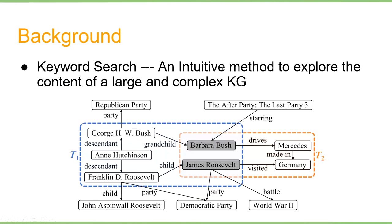When it comes to keyword search, we know it's an intuitive way to explore the contents of a large and complex knowledge graph. For example, to search for the relation between Barbara Bush and James Roosevelt, the blue subgraph is the possible answer. It says that Barbara Bush is the grandchild of George H. W. Bush. James Roosevelt is the child of Franklin D. Roosevelt. George H. W. Bush and Franklin D. Roosevelt, who are both presidents of the United States, are descendants of Annie Hutchinson.